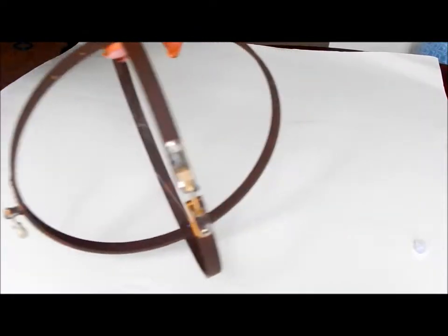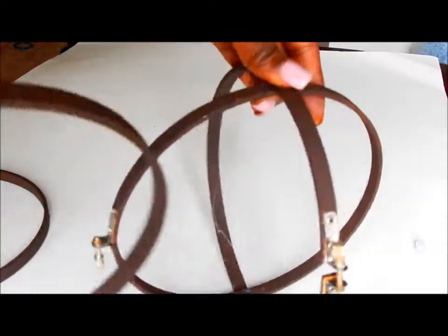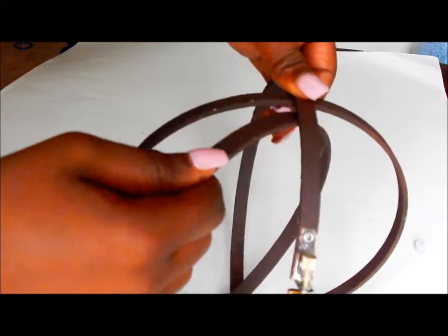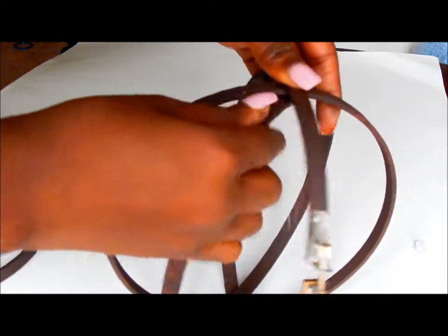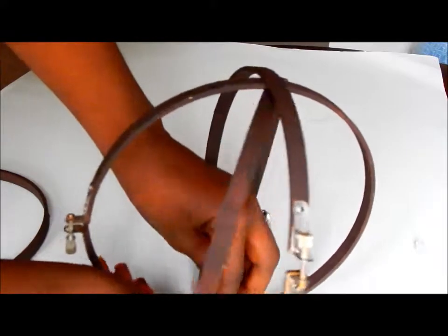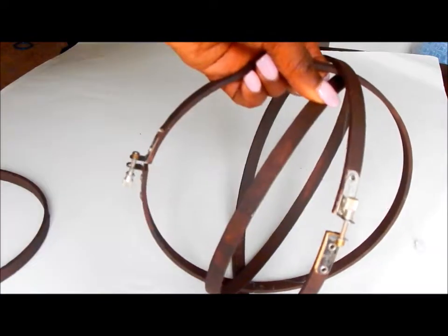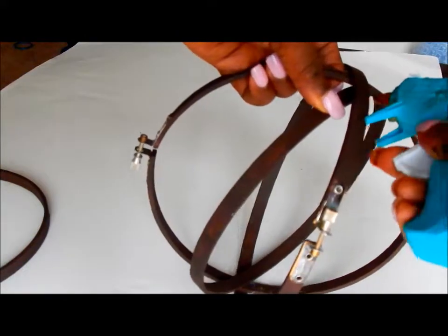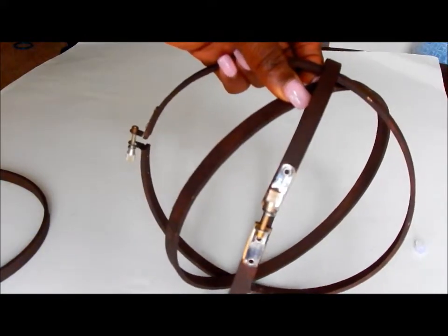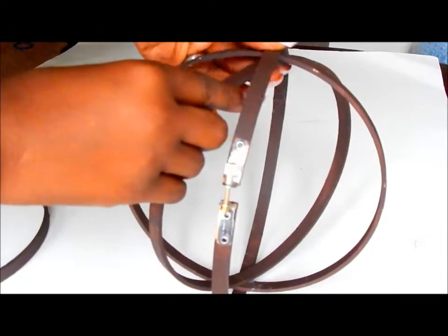Next, you are going to take one of the pieces that do not have the adjuster piece and you are going to crisscross them at this point and just make sure that they line up at the conjunctions of it, and then hot glue everything in place.